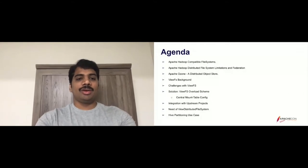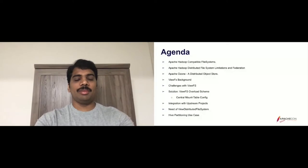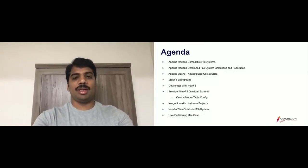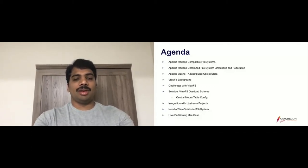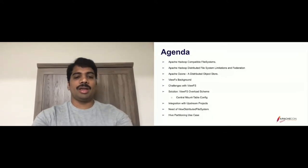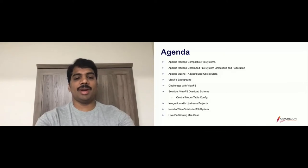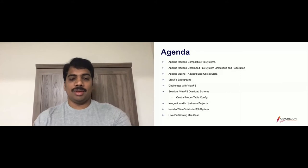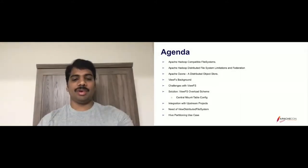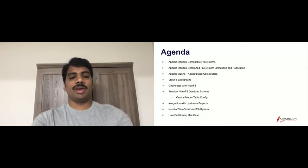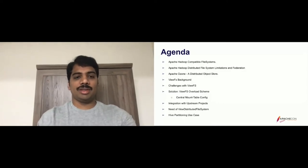Let me jump onto the agenda. First, let's discuss about Hadoop compatible file systems — what we have today. We'll also discuss distributed file system limitations and federation, and touch a little bit on Apache Ozone. Then the actual topic is View File System — we'll look at its background, what challenges we had, and what solutions we came up with. We'll look at View Distributed File System and lastly a Hive partitioning use case, going step by step through how we can execute queries even when data is in two different clusters.